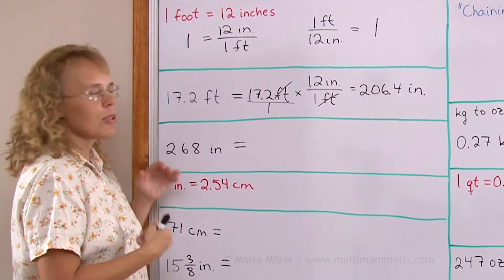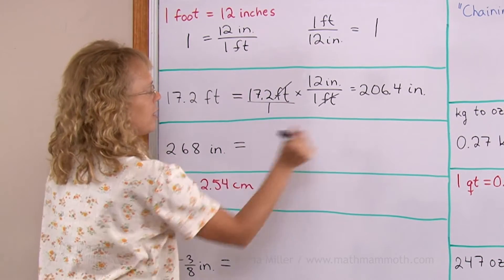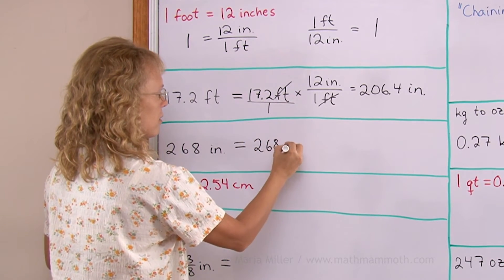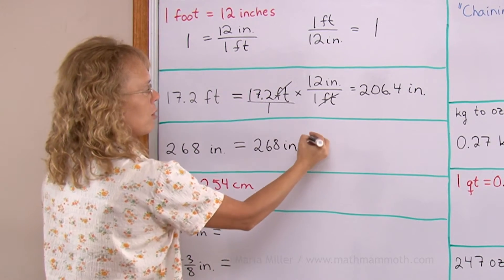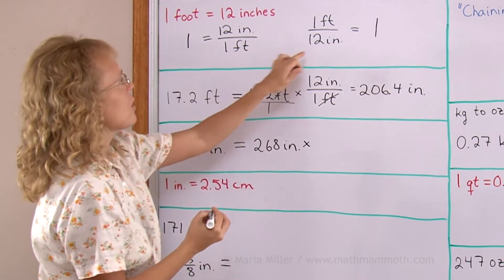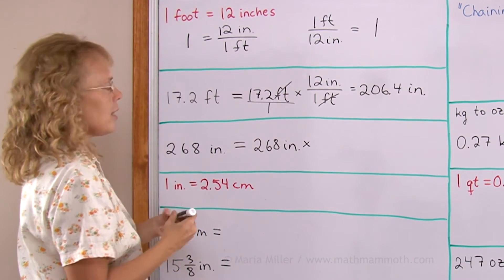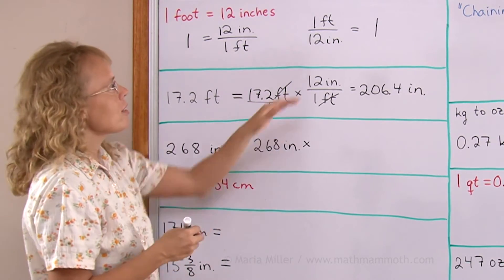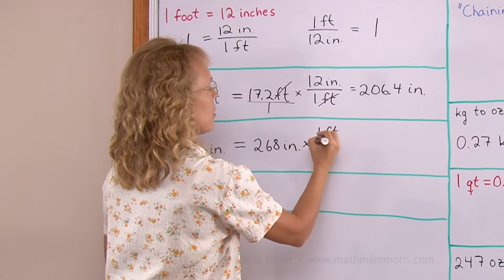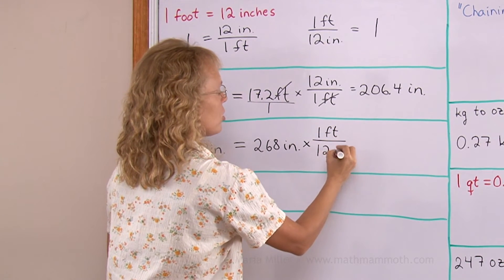Let's look at this example. We'll do it the opposite way, from inches to feet. I'll do the same thing. I'll write this here, then I'll write here number 1. I multiply it by number 1, either this or this number 1. And this time, I want the inches to be in the denominator, so I choose that one. 1 foot on top and then 12 inches here.